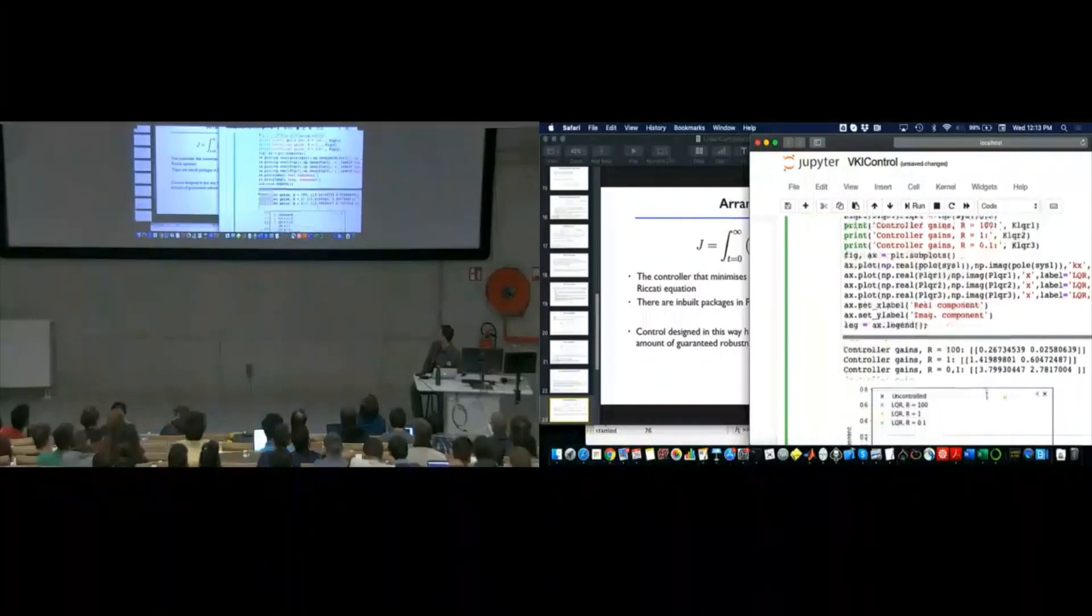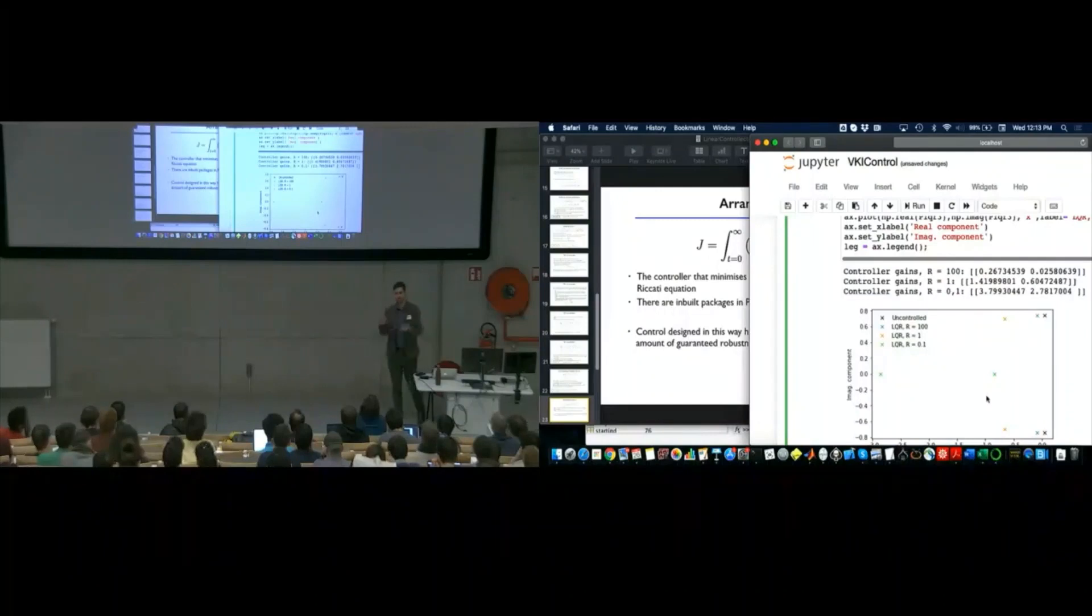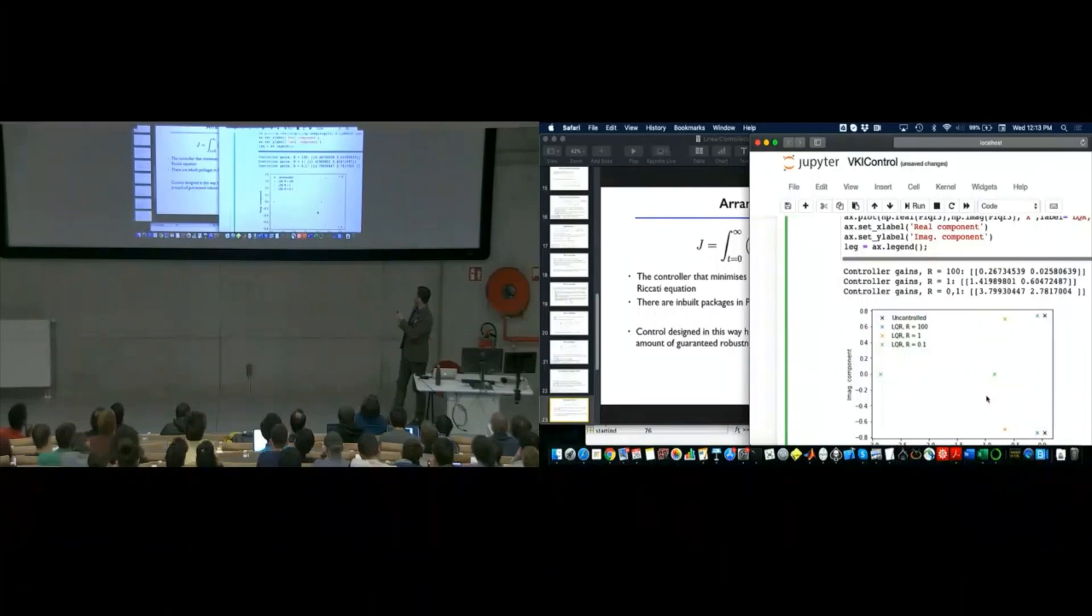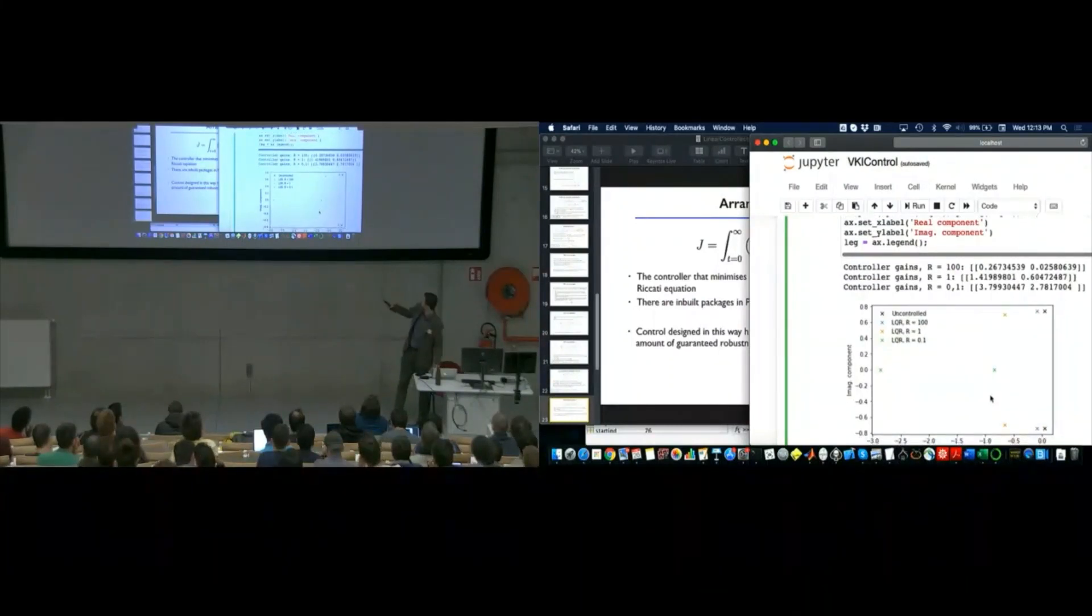Then what I can also look at is how these controllers move my eigenvalues. So, the black crosses here are the open-loop poles of my system, of the uncontrolled case. For R equals 100, that's where I have very small controller gains. We stabilize the system, which we're guaranteed to do. But we don't move the eigenvalues very much at all. So, this is kind of like the low effort controller. The student that just wants to pass and does minimal effort in order to get the one outcome that they need to do, which is to stabilize the system. Whereas if we allow our controller to be more aggressive, then we move the eigenvalues further into the left half plane.